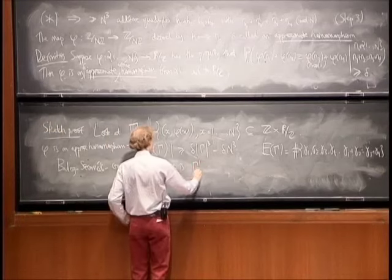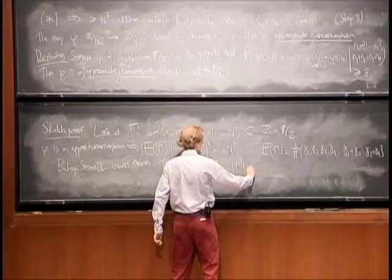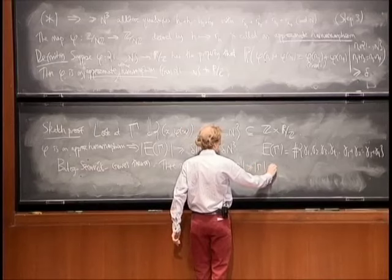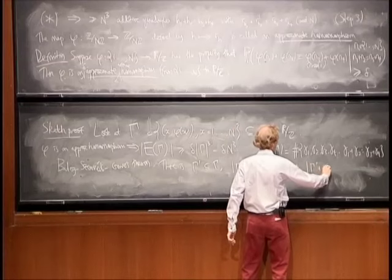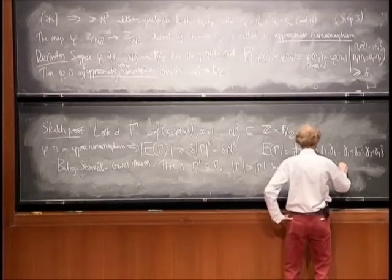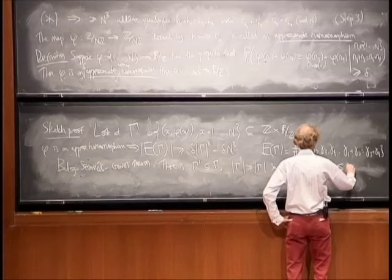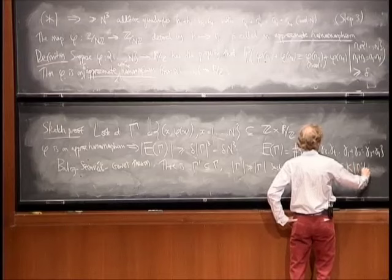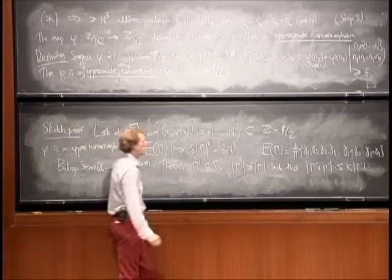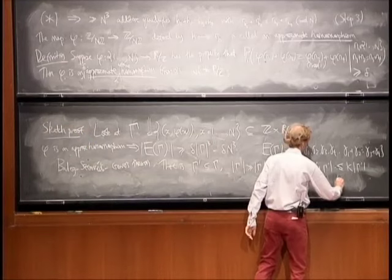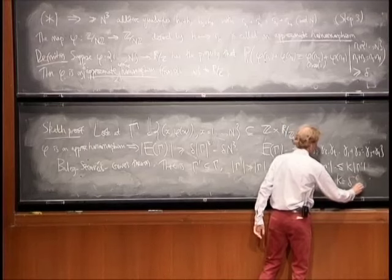So there is gamma prime contained in gamma, which is a large portion of gamma, such that gamma prime plus gamma prime is bounded above by, let's say, some constant K times gamma prime, where K is, well it's actually could be, I think, delta to the minus 6 or something like that would work.